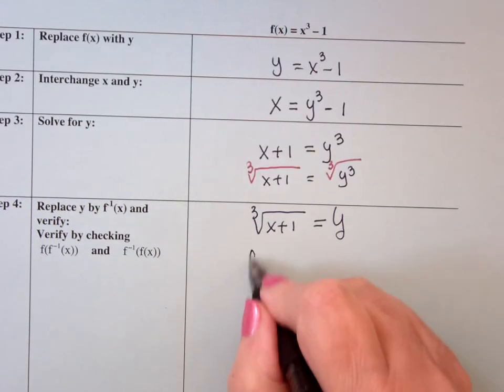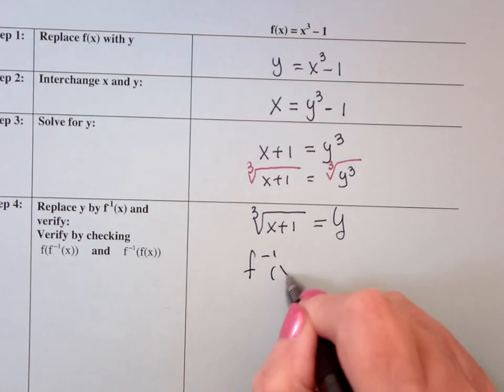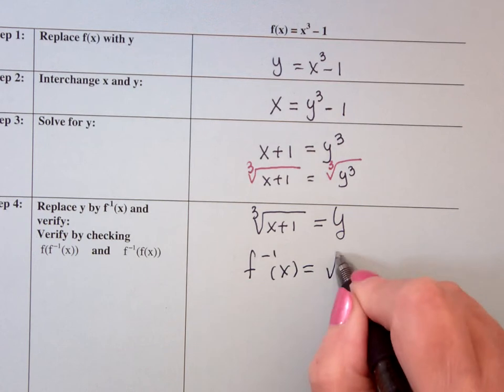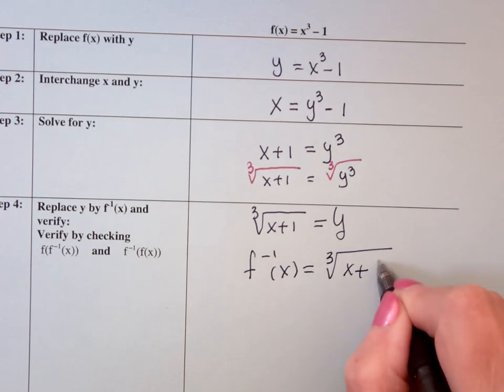So that means that my inverse, f inverse of x, my candidate is the cube root of x plus 1.